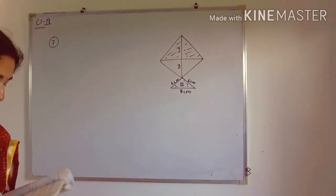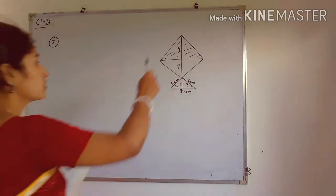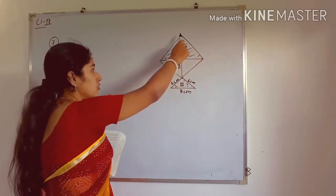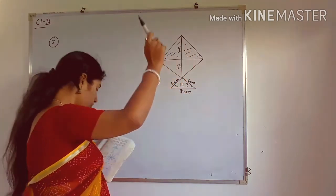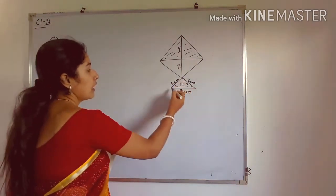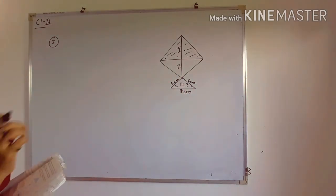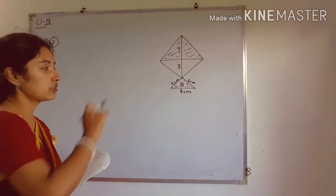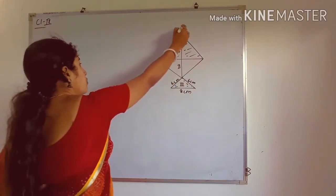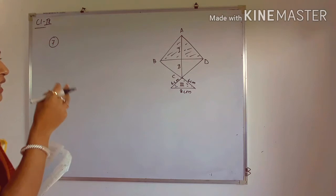Question number 7 involves a kite in the shape of a square with an isosceles triangle attached. The kite has diagonals; both diagonals of the square are equal and the length of the diagonal is 32 centimeters. The isosceles triangle has a base of 8 cm and the other two sides are 6 cm each. We need to find the area of each of the three shaded regions.